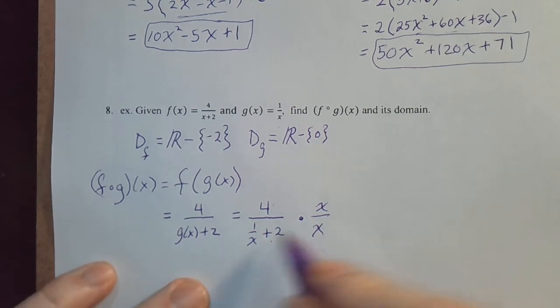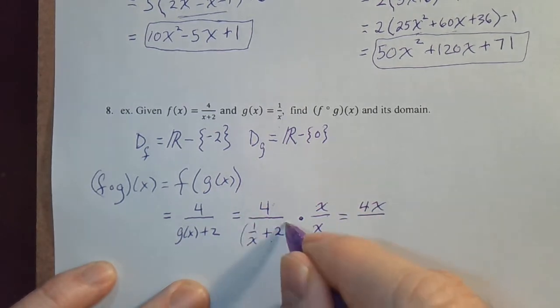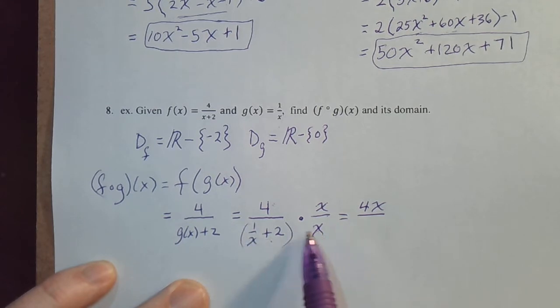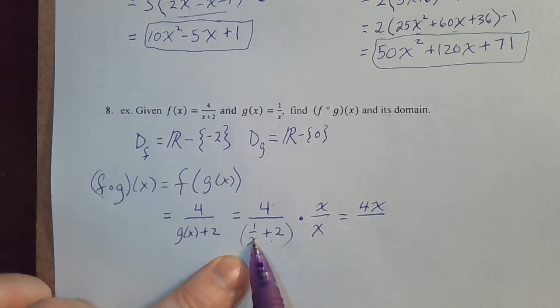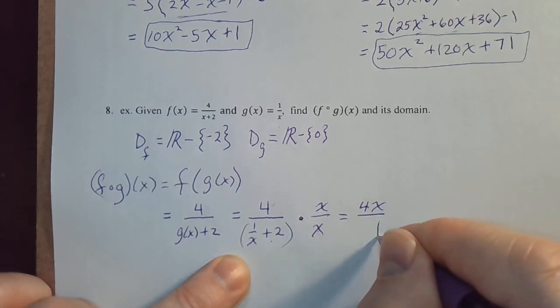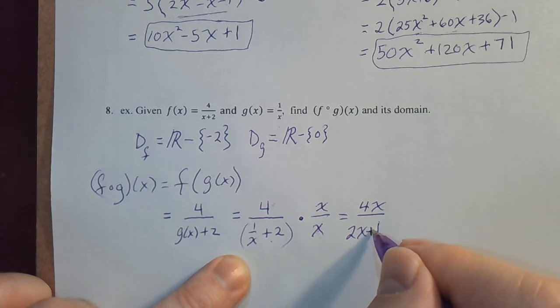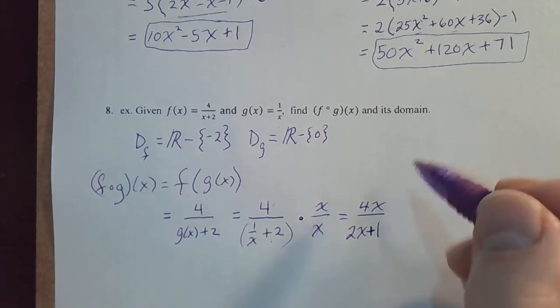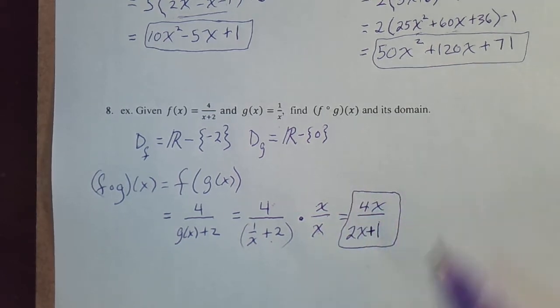So what does that give us on top? 4x. Now on the bottom, I'm going to distribute. It's x times 1 over x plus x times 2. What is x times 1 over x? x over x, that's a 1. And x times 2 is 2x. I reversed the order just to put it in a better order. So this is f composed with g of x.